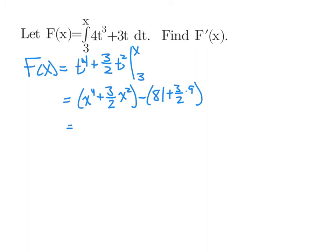So we plug in x first, and we'll have x to the fourth plus 3 halves x squared. And then subtract, plugging in 3, 3 to the fourth is 81, and 3 halves times 9.